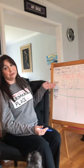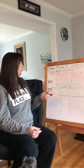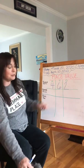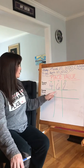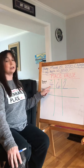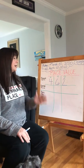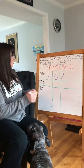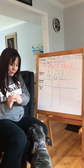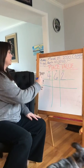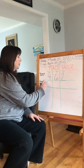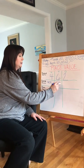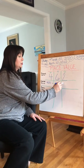All right, so place value. We have a three-digit number here — 462. In the ones place, we have a 2. In the tens place, we have a 6. And in the hundreds place, the digit is 4. We put that together, we have 462. To write that in expanded form, you would write 400 plus 60 plus 2.